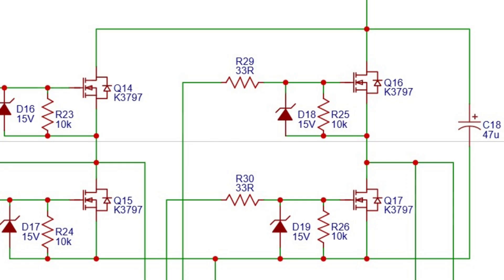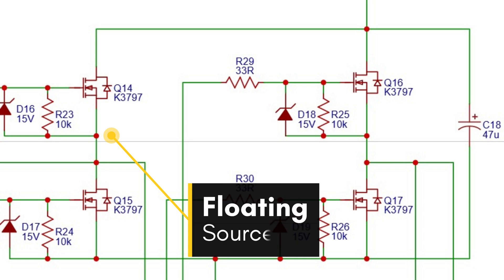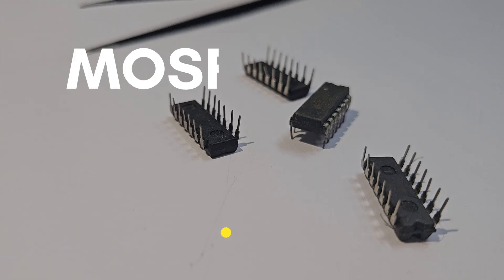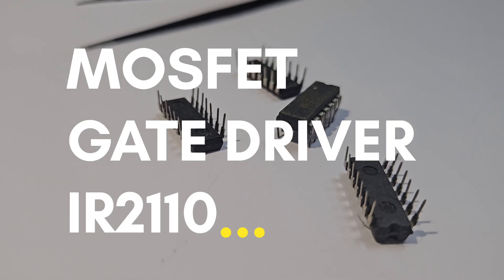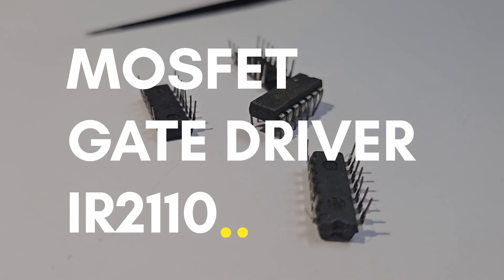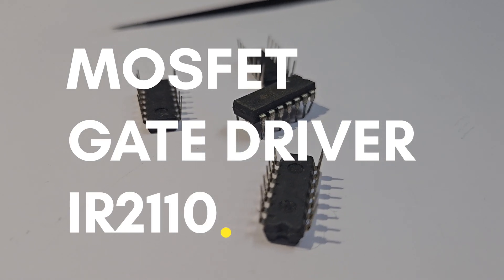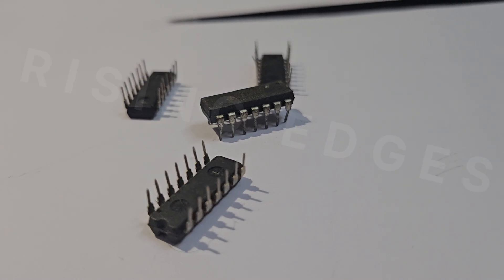Secondly, when an N-channel MOSFET is used as a high-side switch, it can't be driven directly because of its floating source. That's why we need gate driver ICs like the IR2110. Let's see how the bootstrapping circuitry of a typical MOSFET gate driver works.